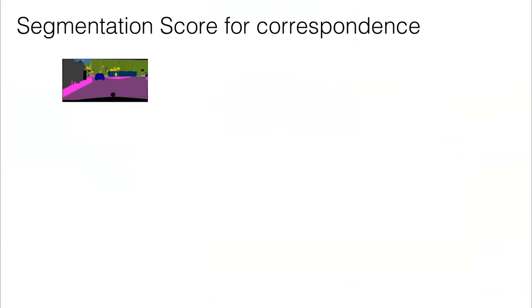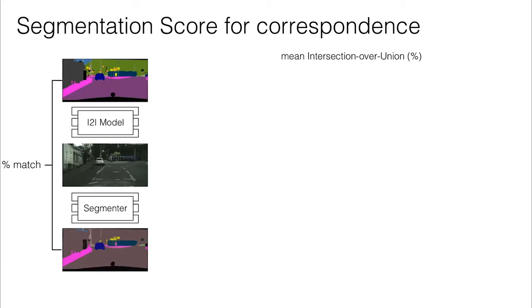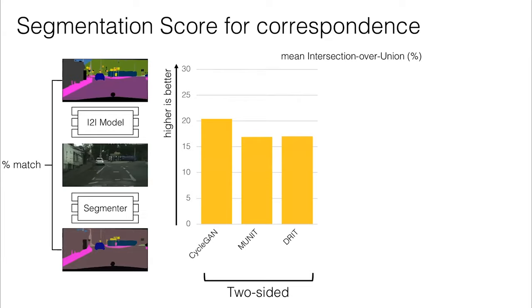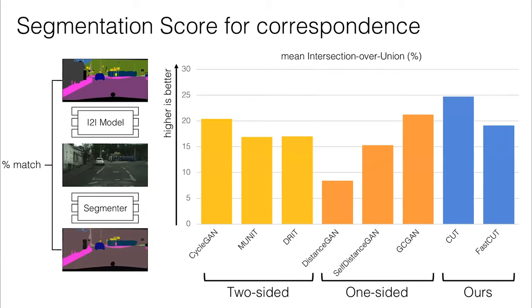We motivated this talk by saying that this system should be good for discovering correspondence. We'd actually like to try to measure that. We can use the semantic segmentation score to evaluate the correspondence. You can start with this label map, run the image translation model like CUT or CycleGAN to get an image, put it through a pre-trained semantic segmentation model and check how much the input and output agree. We can measure this with mean IOU. Here higher is better. We see that CycleGAN and other two-sided methods get these yellow values. Here are the one-sided methods, which are designed to be faster, but many seem to not be as good at discovering correspondence, except GCGAN. Here's CUT and FastCUT. You see that CUT is able to discover stronger correspondences than CycleGAN or GCGAN.